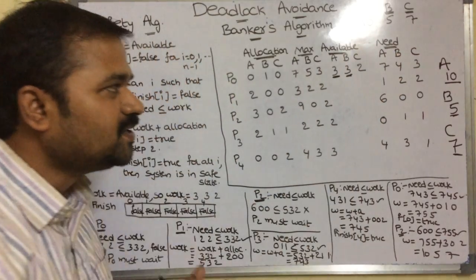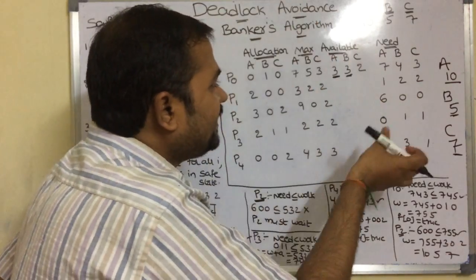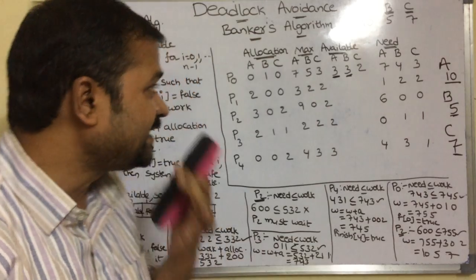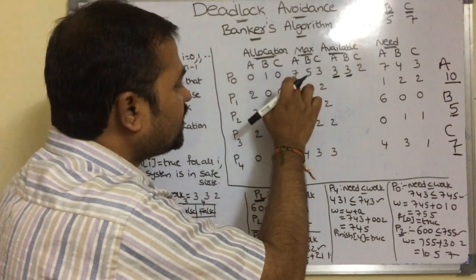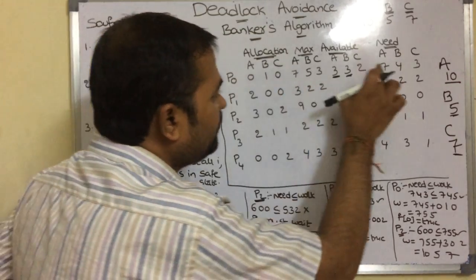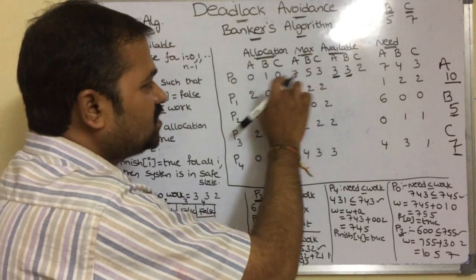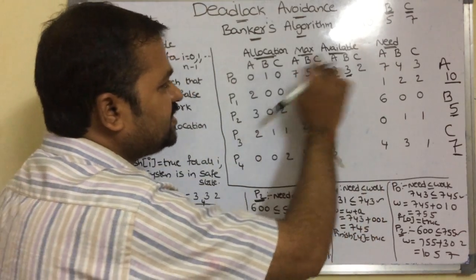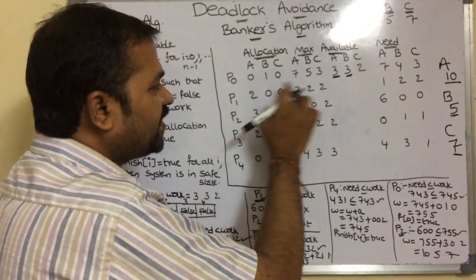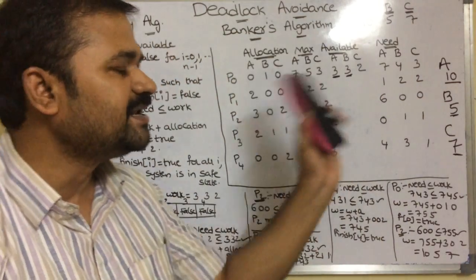Next, we calculate the Need matrix. The formula is: Need = Maximum minus Allocation. For P0 and resource A: maximum is 7, allocated is 0, so need is 7. For B: 5 minus 1 equals 4. For C: 3 minus 0 equals 3. So P0's need is 7, 4, 3. For P1: A is 3 minus 2 equals 1, B is 2 minus 0 equals 2, C is 2 minus 0 equals 2. So P1's need is 1, 2, 2.